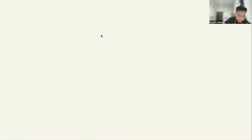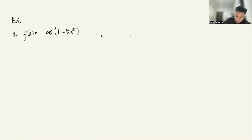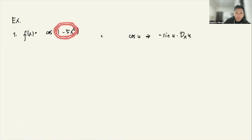We will start now with our examples. For number 1, let's say f of x is equal to cosine of 1 minus 5x squared. So from our previous video, the derivative of cosine of u is negative sine of u times the derivative of u, since u is differentiable at x. So u here is 1 minus 5x squared — it's a composition of two functions: cosine x and 1 minus 5x squared.